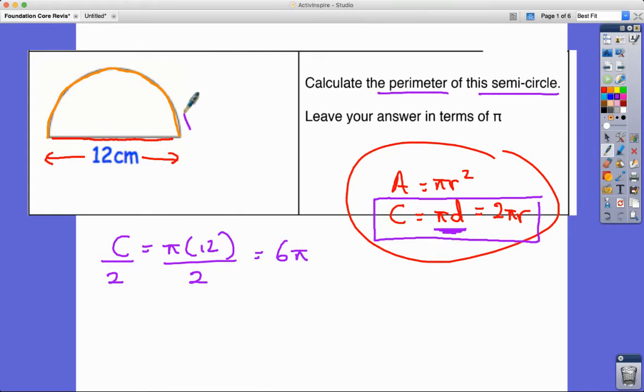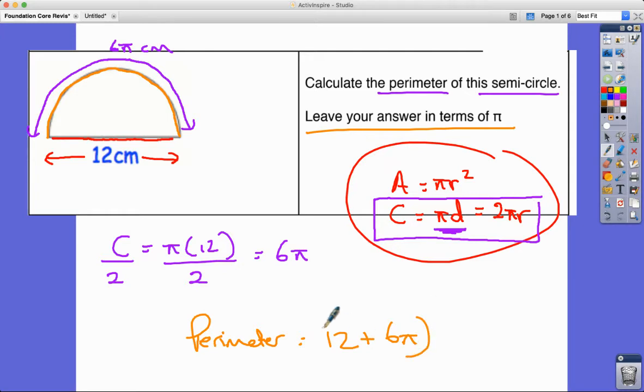The 6 pi is the length going all the way around there, 6 pi, and it's in centimeters as well. So the perimeter in terms of pi wants us to have pi in the answer. The perimeter is equal to 12 plus 6 pi centimeters.